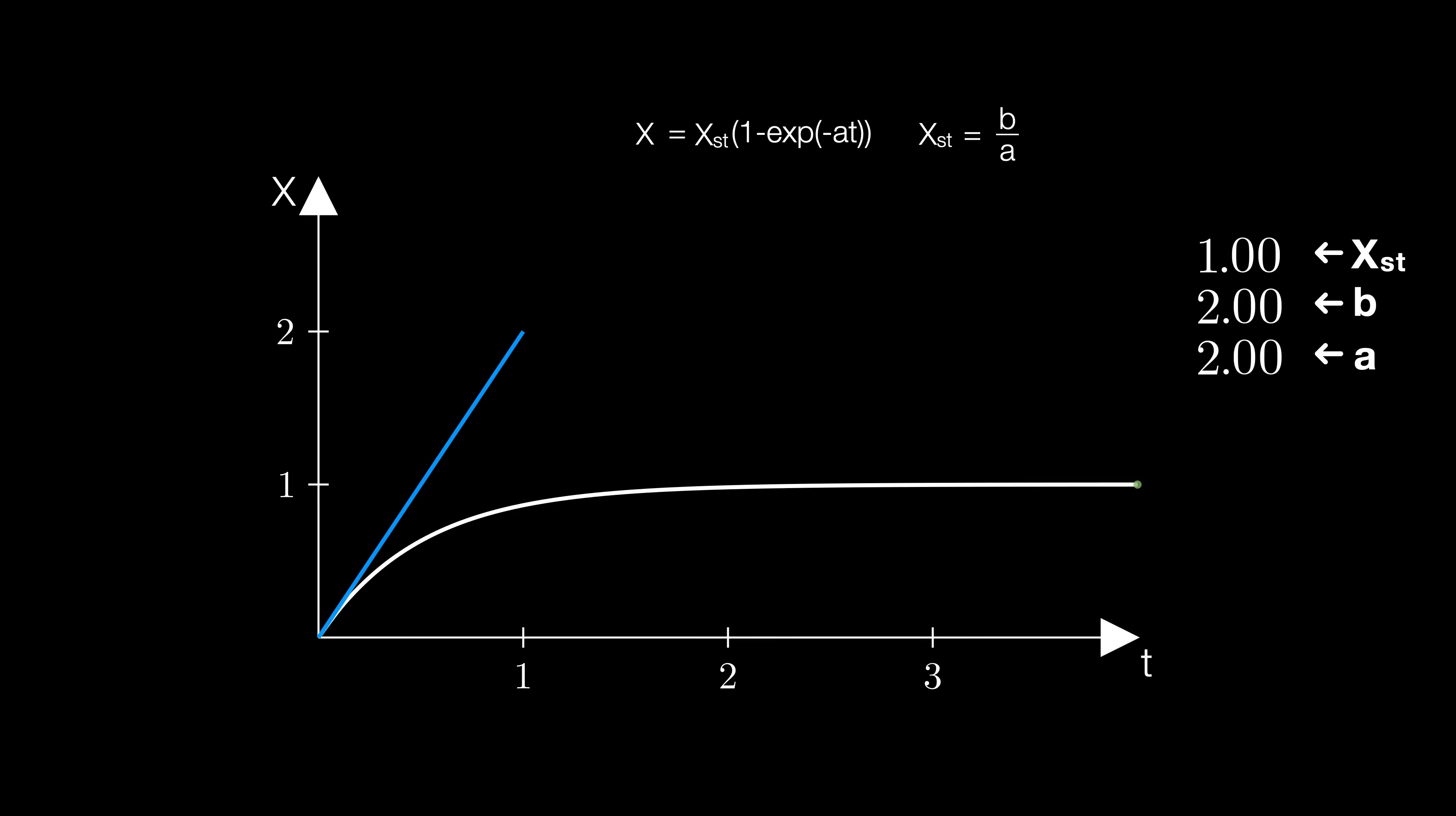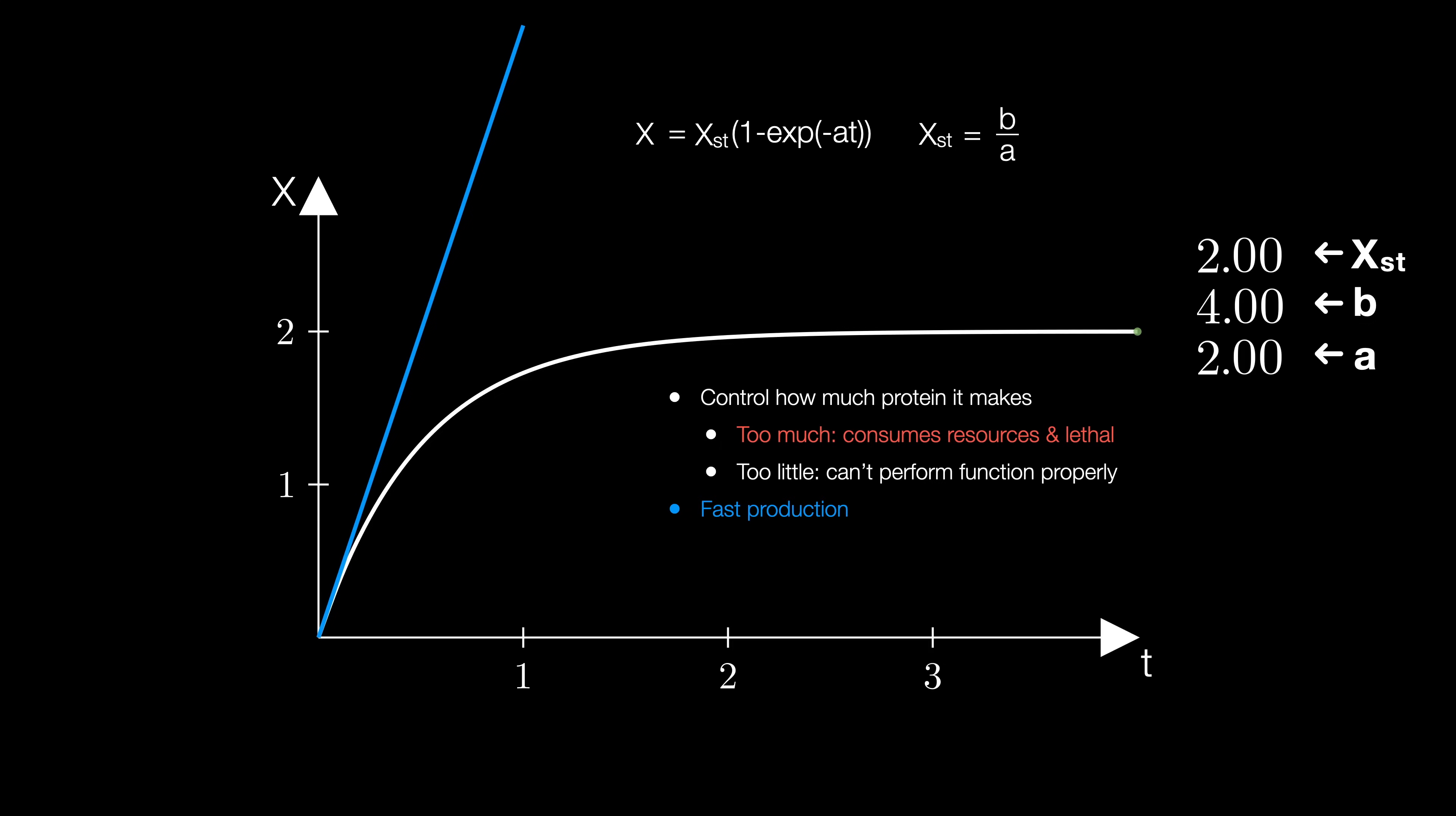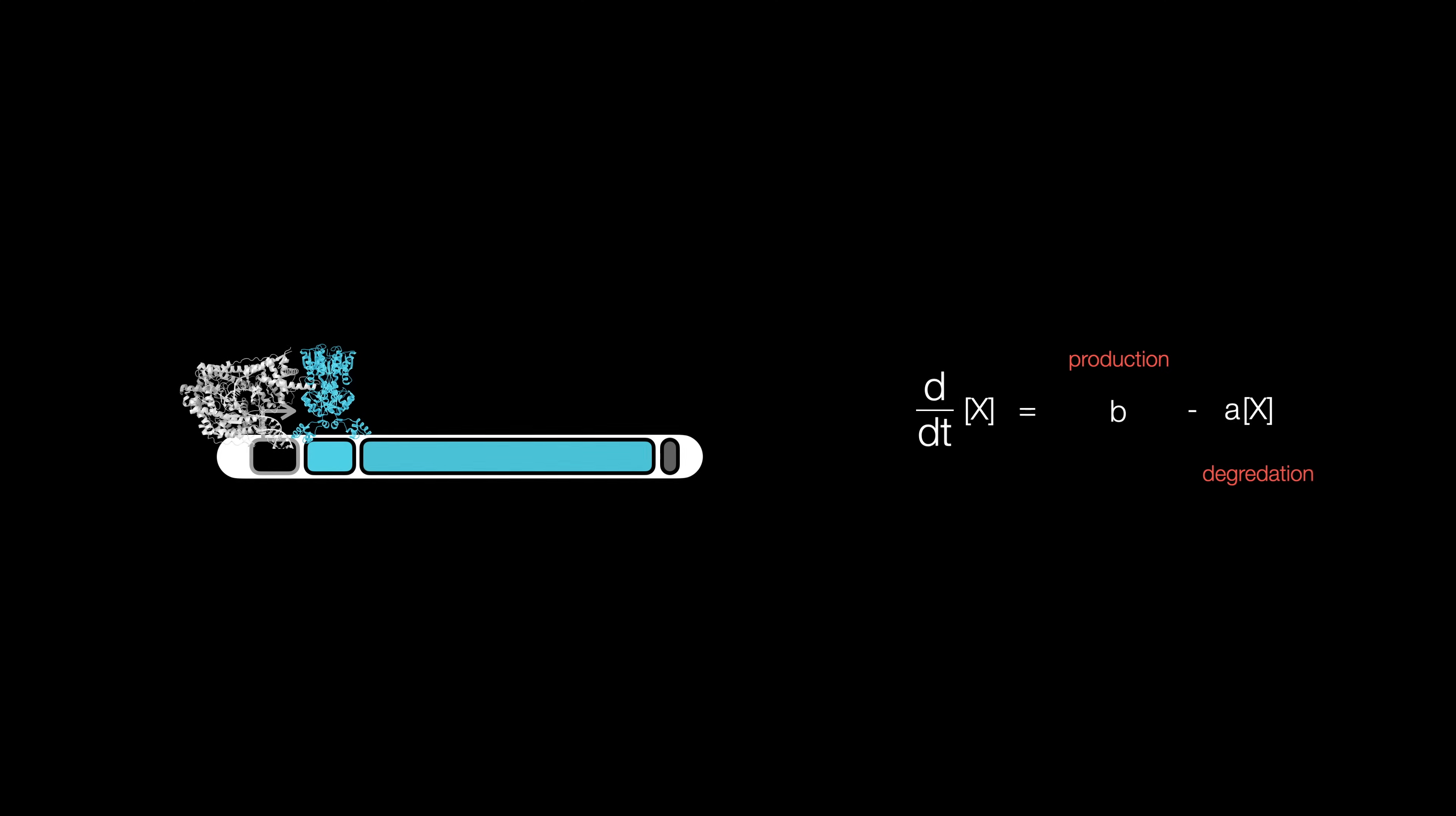And while that actually goes faster, it creates a paradox, a problem if you may, because it actually pushes the steady state to higher values. The problem is that this could be potentially toxic and waste too many resources. So this is where negative autoregulation comes in.